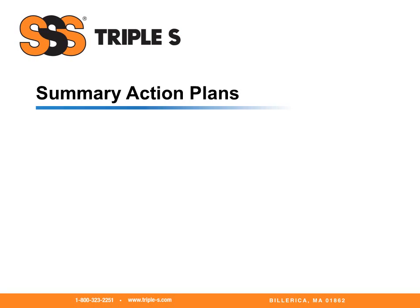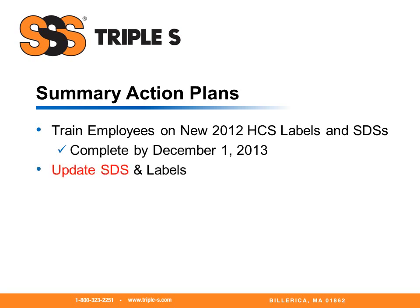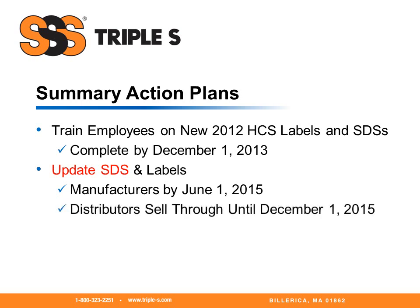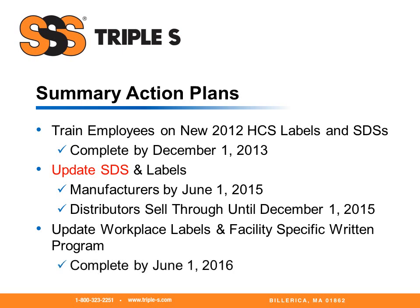In conclusion, here are some things that need to be done. Train employees on new 2012 Hazard Communication System labels and safety data sheets — this must be completed by December 1st, 2013. Update safety data sheets and labels — manufacturers have until June 1st, 2015 to have all labels and safety data sheets compliant, and distributors may sell through these products until December 1st, 2015. Update workplace labels and facility-specific written programs — this must be accomplished by June 1st, 2016.